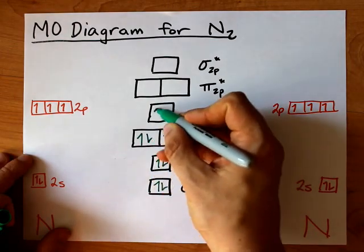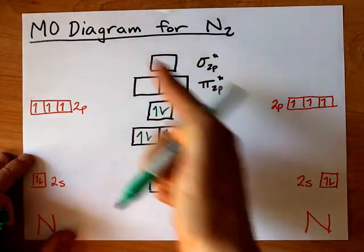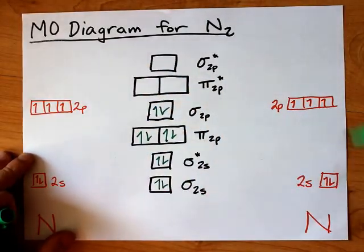Seven, eight, nine, ten. That's my ten electrons. This is the complete molecular orbital diagram for N2.